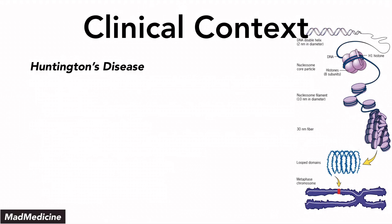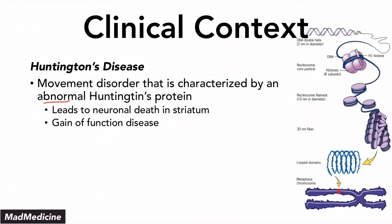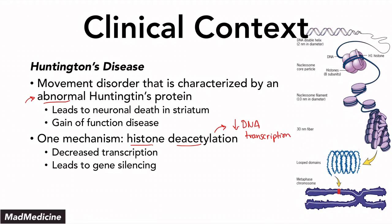The other clinical context is Huntington's disease — a movement disorder characterized by an abnormal Huntington protein, leading to neuronal death in the striatum. It is a gain-of-function disease, meaning you gain the function of creating an abnormal Huntington protein. One thought is that histone deacetylation, which causes a decrease in DNA transcription, is the mechanism behind production of the abnormal Huntington protein. This decreased transcription leads to gene silencing, causing the Huntington protein to be non-functional and abnormal.